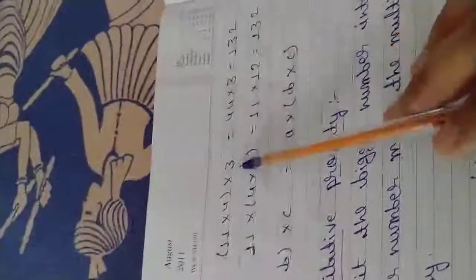Next is Associative Property. When we multiply more than two numbers, the product does not change if the grouping of numbers is changed. For example, I have an example here: 11 into 4 into 3. If we group 11 into 4, then 44 will be obtained. Then multiply by 3, we get 132.